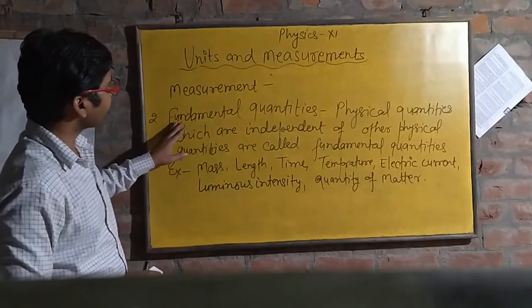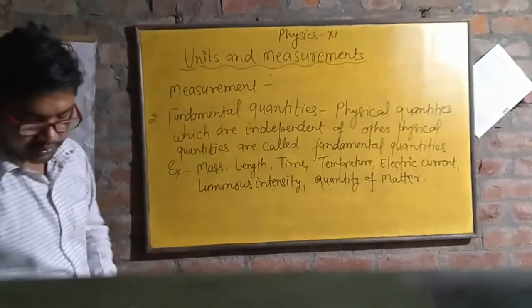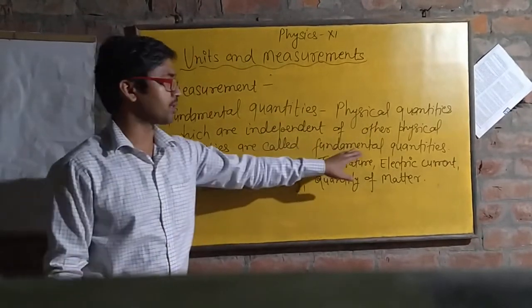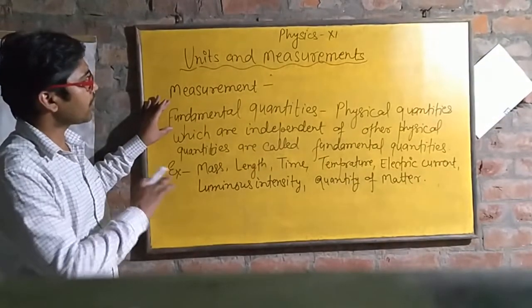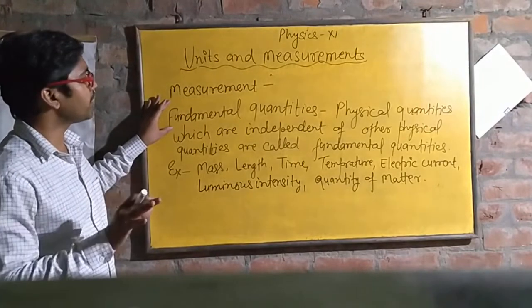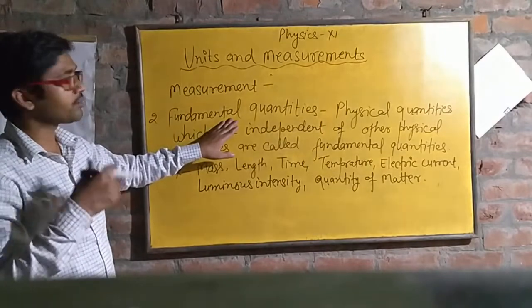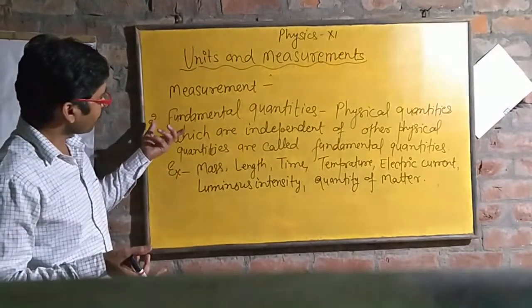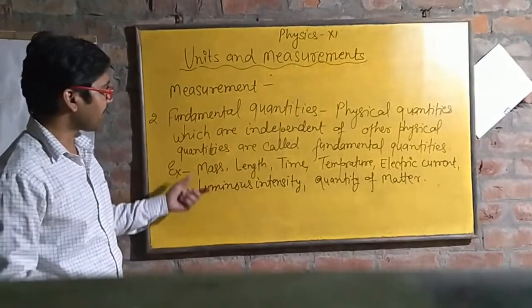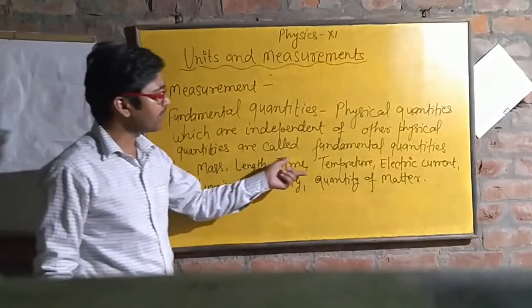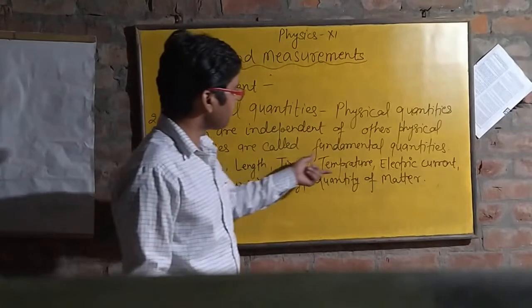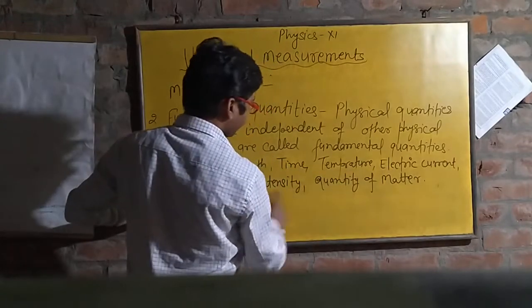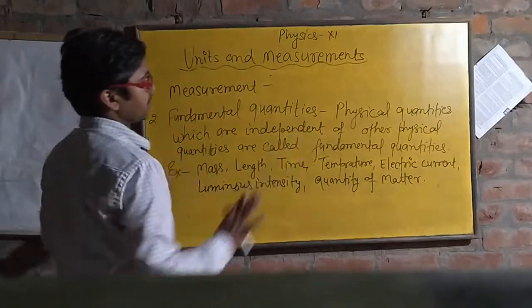We are going to understand what fundamental quantities are. Physical quantities which are independent of other physical quantities are called fundamental quantities. Fundamental quantities are independent — they are not related to any other physical quantity. They have their own value. For example, mass is independent of length, time, temperature, electric current, etc. Similarly, length is independent of time, temperature, electric current. These are examples of fundamental quantities — they are completely independent from each other.